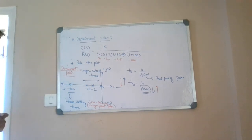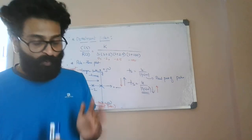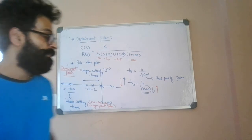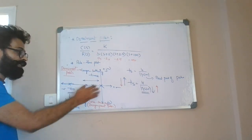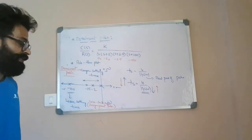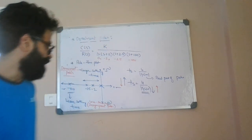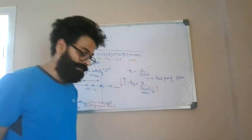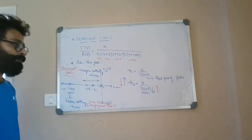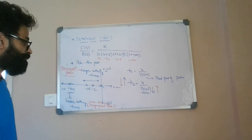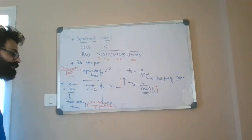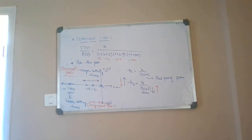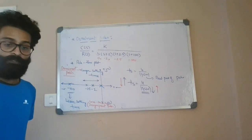So, dominant poles are poles of the closed-loop system which are very close to the imaginary axis. On the other hand, non-dominant poles or insignificant poles are the poles of the closed-loop transfer function which are found far away from the imaginary axis. That's the concept of dominant poles.